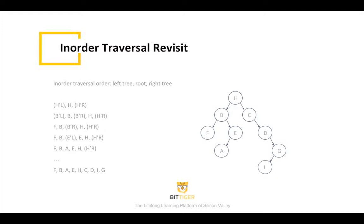As for B's right tree, E doesn't have a right tree, so add A and E to the sequence. Now we have finished all nodes on H's left tree, which are F, B, A, E in sequence. We apply the same procedure for H's right tree, and finally get the overall in-order traversal as F, B, A, E, H, C, D, I, G.